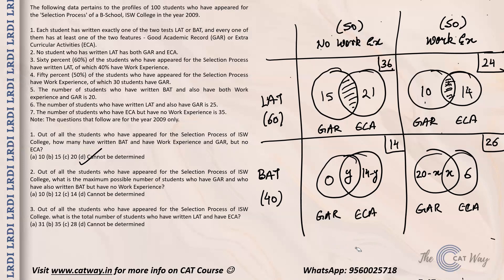Actually, the question is about ECA, not GAR, because GAR for BAT with no work experience is 0. The maximum number of people with ECA in that cell is 14. So the correct answer for this question is option C, 14.